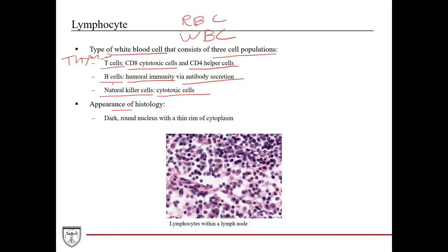An inactivated B cell, T cell, or natural killer cell — you can't tell them apart on histology. Here we have a section from a lymph node, which is very abundant with lymphocytes. What you'll notice is they have a dark, round nucleus with a very thin rim of cytoplasm around them. Oftentimes you won't even see the cytoplasm depending on the cut. Looking at this cell, the nucleus takes up most of the space, with just a little rim of cytoplasm visible.